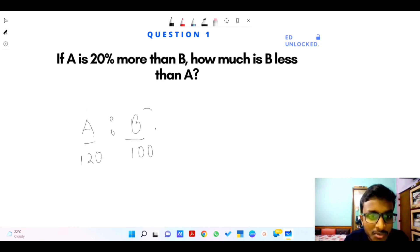So we take 20 percent. I convert it: 20 by 100, that correlates to 1 by 5. So 1 by 5, 20 percent more. So A is to B.